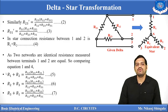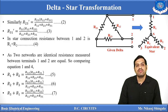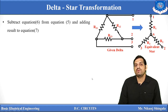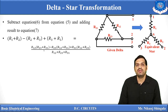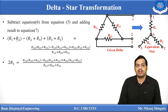Now, suppose we want to find the value of R1. We add equations 5 and 7 and then subtract equation 6 from the result. Doing this, R2 and R3 cancel out on the left-hand side, leaving 2·R1.